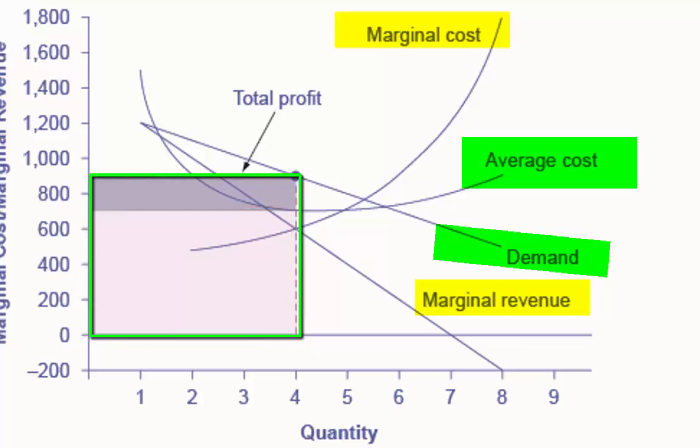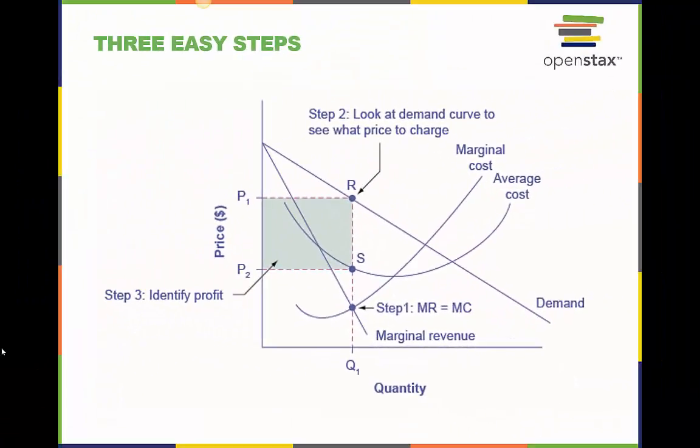The large total revenue box minus the smaller total cost box leaves the darkly shaded box that shows total profits. Since the price charged is above average cost, the firm is earning positive profits. Here are three easy steps to determine the profit of a monopoly.